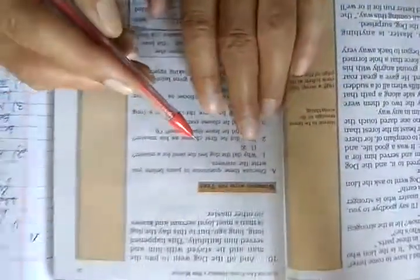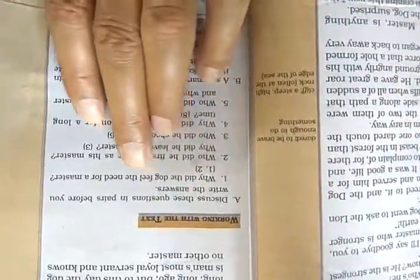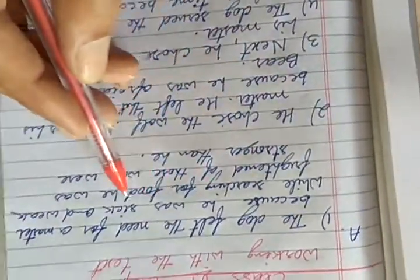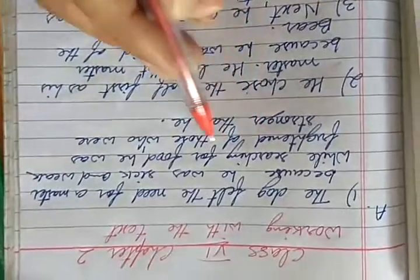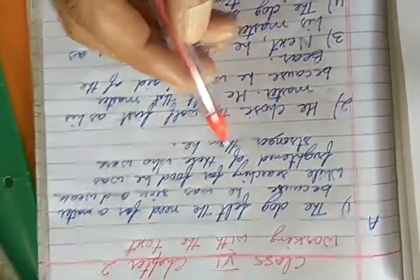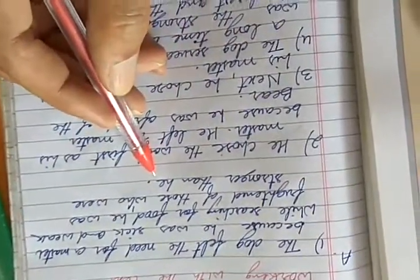See, the first question here is, why did the dog feel the need for a master? The dog felt the need for a master because he was sick and weak while searching for food, he was frightened of those who were stronger than he was.